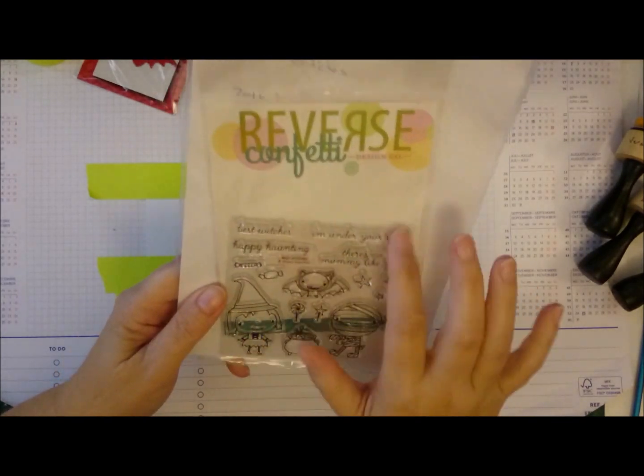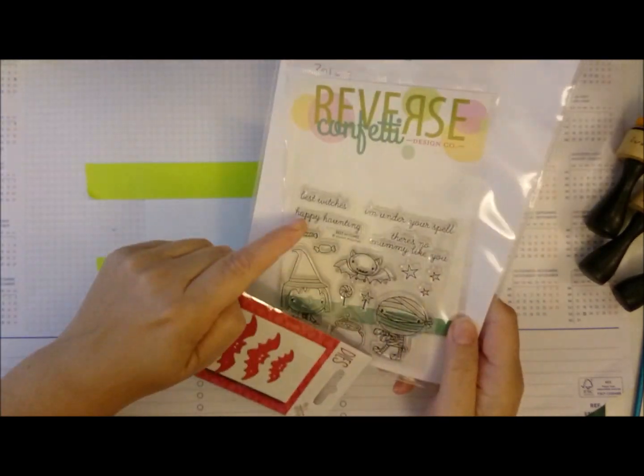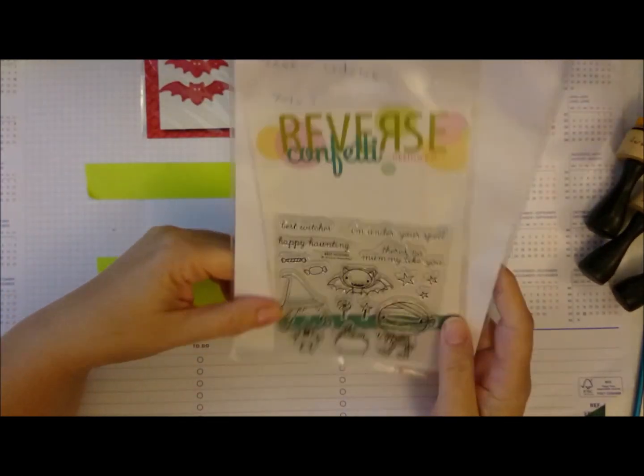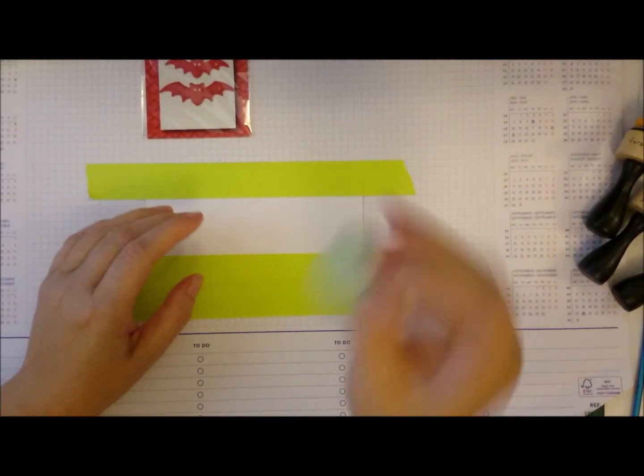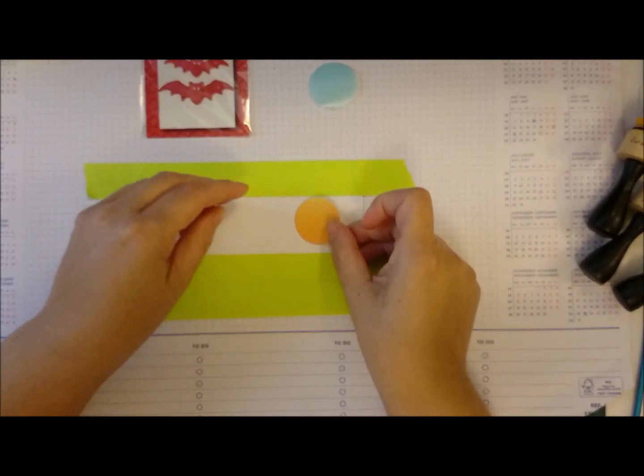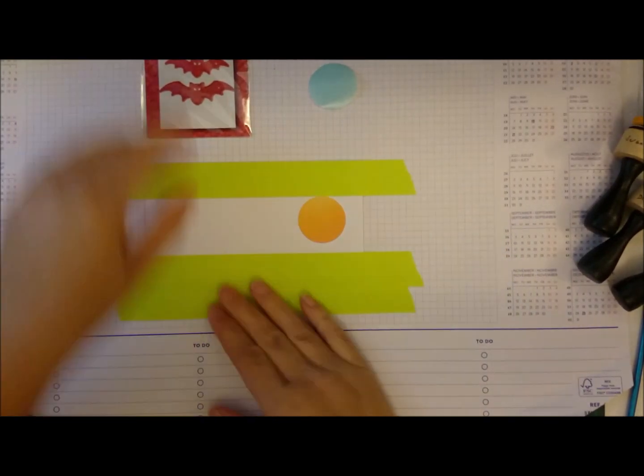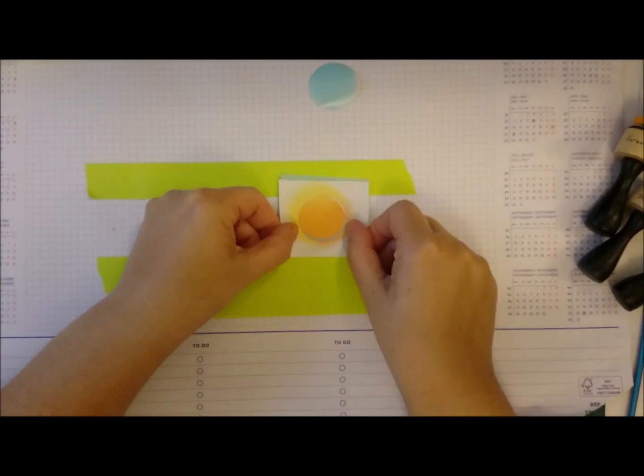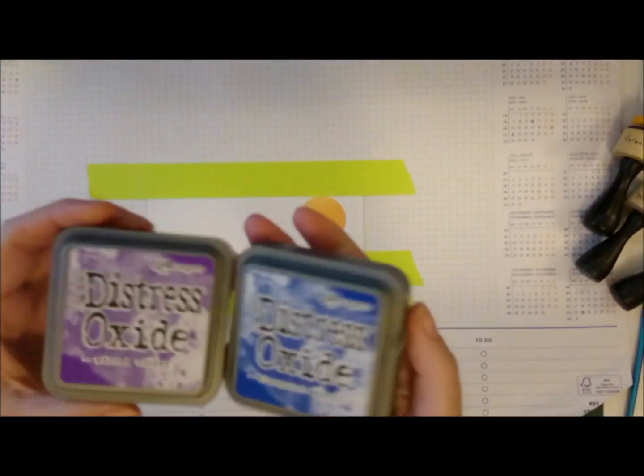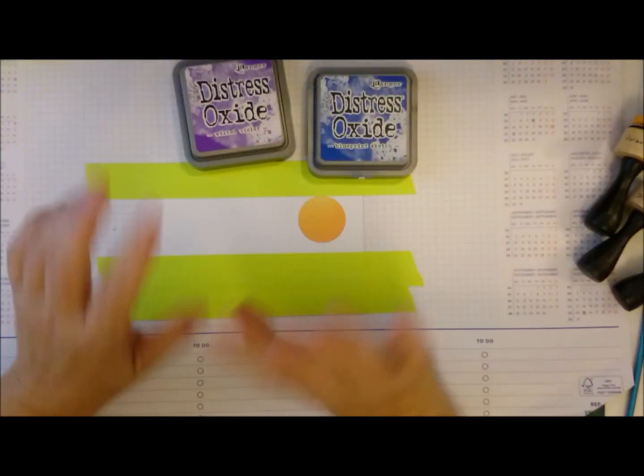This is my only Halloween set I have and there's nothing that goes except Happy Hauntings, so I just omitted the sentiment but you can put on anything that you want and use any dies that you have. These are from Action by the way if you can still find them. And I have this mask of a moon that I die cut from Inkadinkado masking paper.